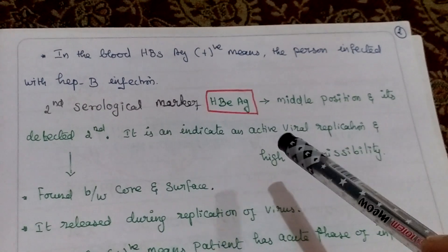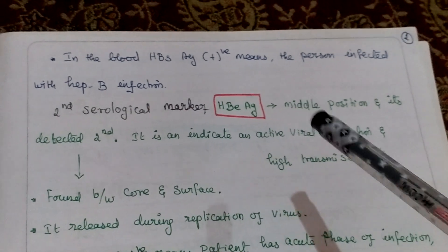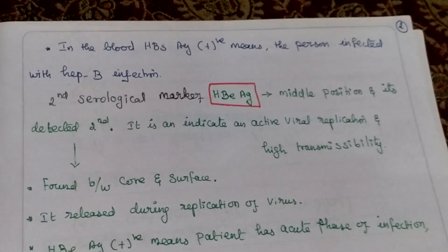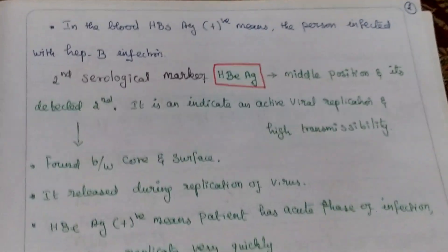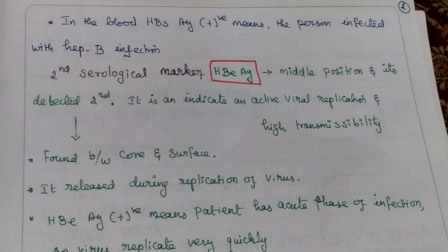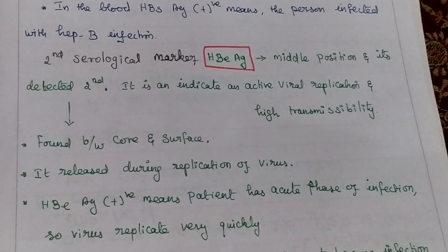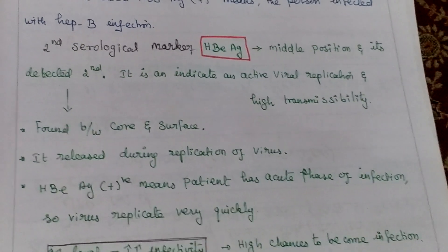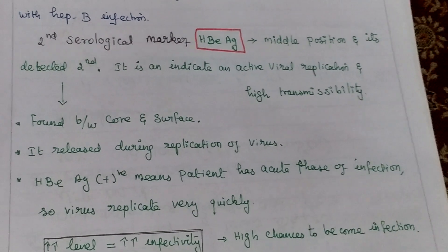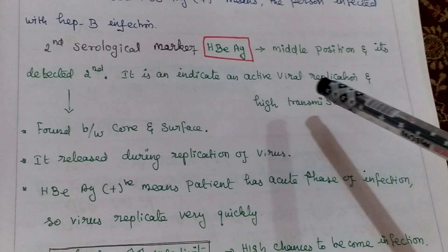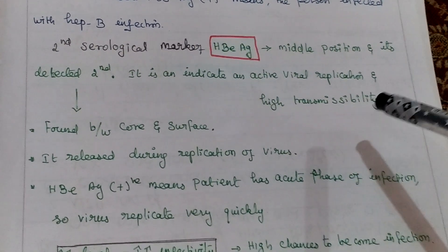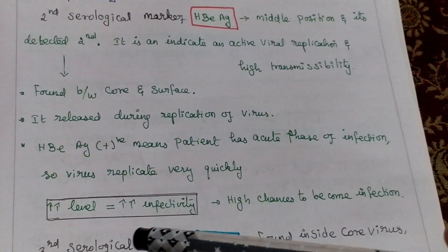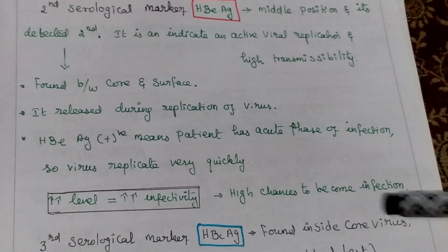Second marker is HBeAg, envelope antigen. This is present in the middle position between core and surface, so we detect it second. It's released during viral replication. HBeAg positive means patient has acute phase of infection, so virus replicates very quickly. It indicates viral replication and high transmissibility. Higher level of E antigen means high chances to become infected.